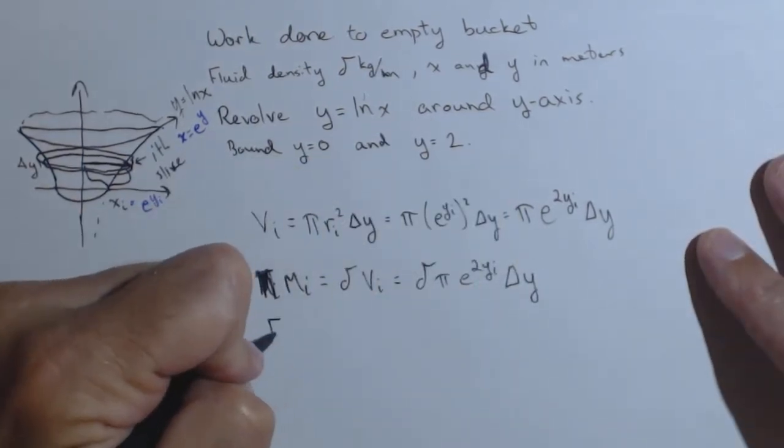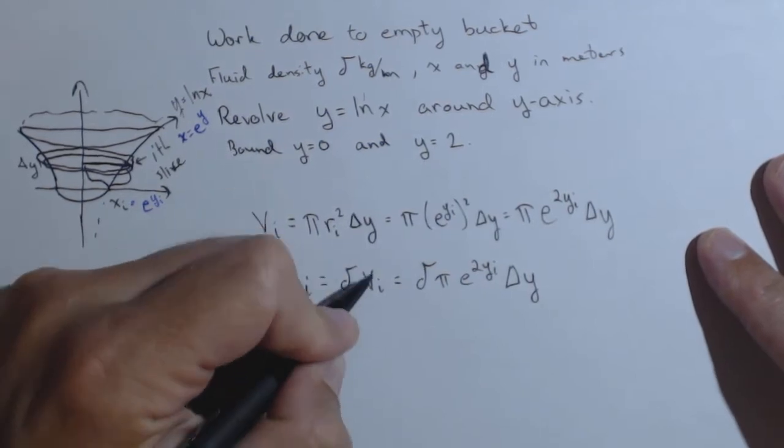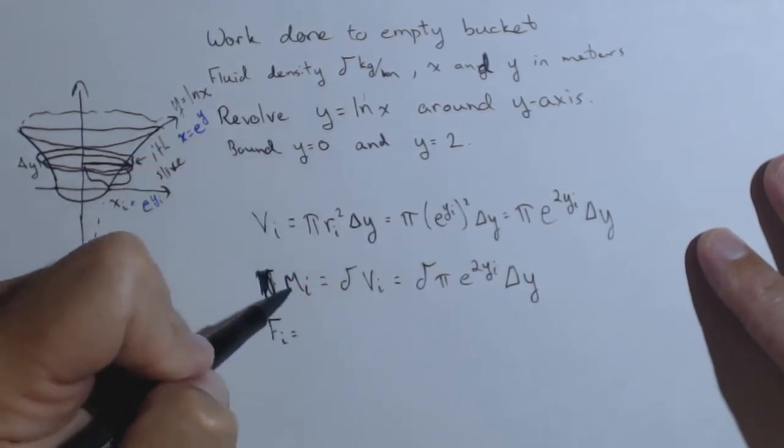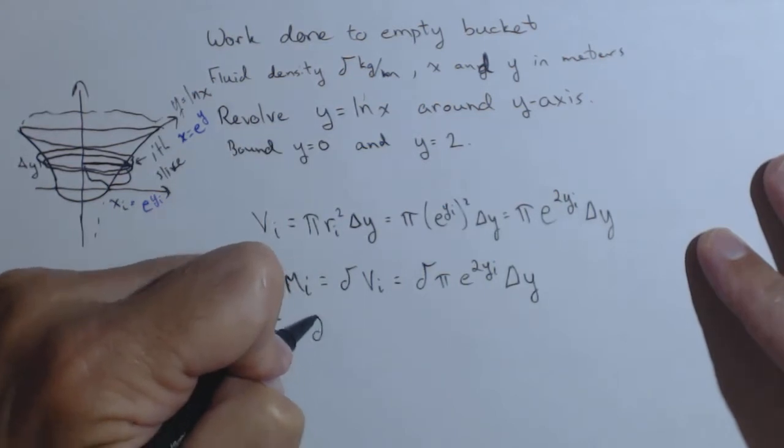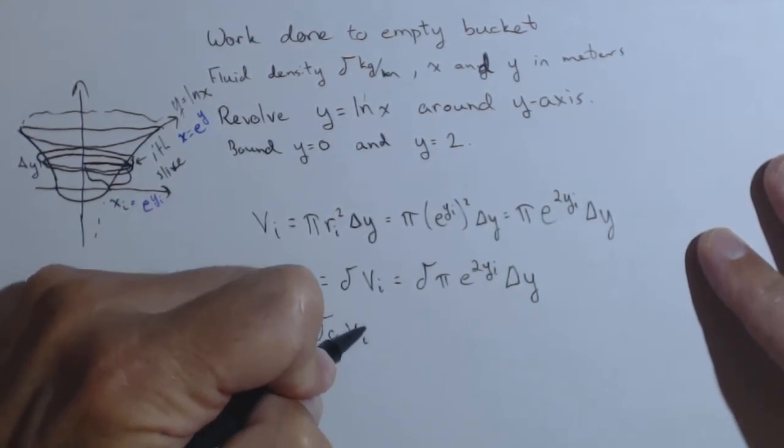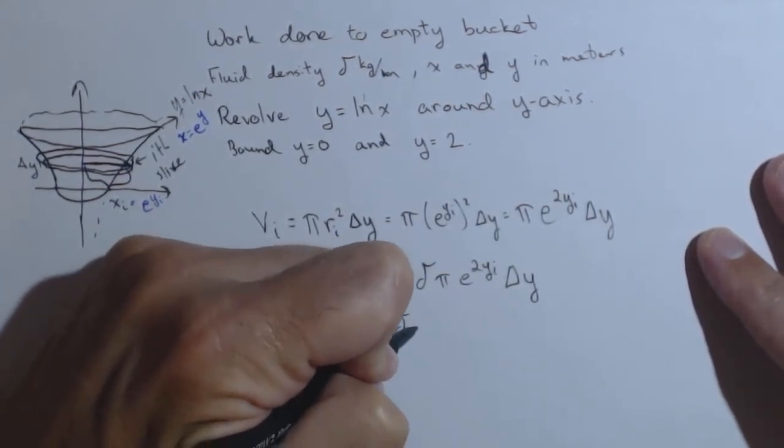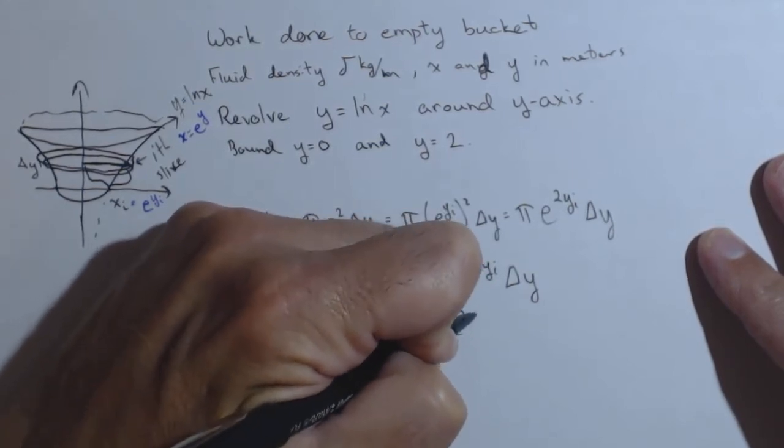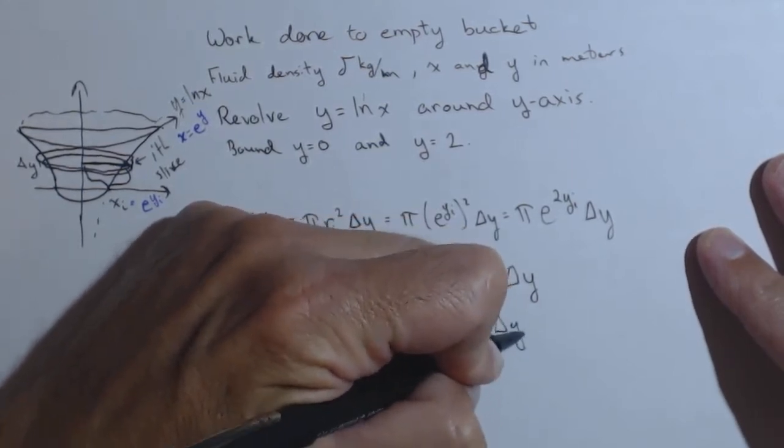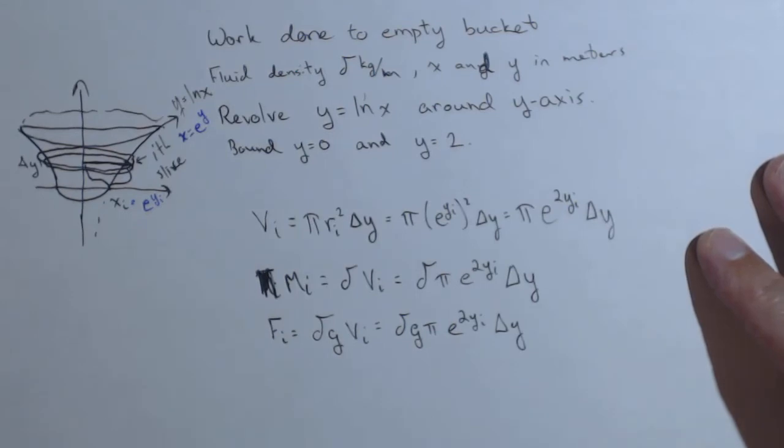Next, we can find the force of the i-th slice. This is a mass, so we need to multiply by gravity. That gives us delta*g*pi*e^(2y_i)*delta y.